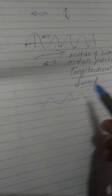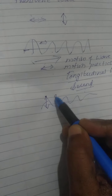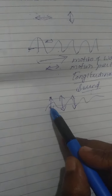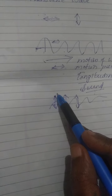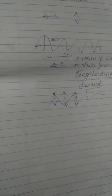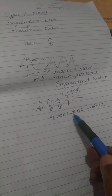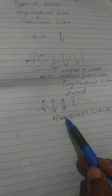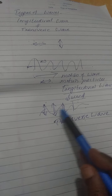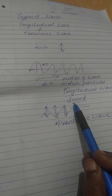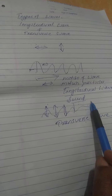In another type of wave, the wave is moving in this direction but the particles present in the medium move up and down — not to and fro, but up and down. So this is the direction of propagation of the wave, but the direction of motion of the particle is perpendicular to the direction in which the wave is moving. These types of waves are called transverse waves.